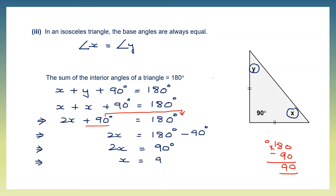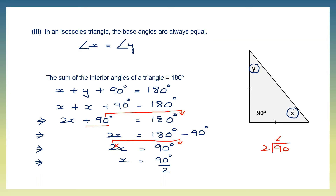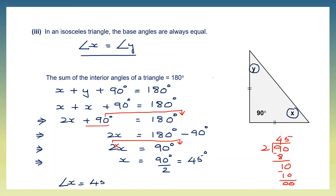So x equals 90 degrees divided by 2, which is 45 degrees. That means the value of x is 45 degrees. And since angle x equals angle y, angle y is also 45 degrees.